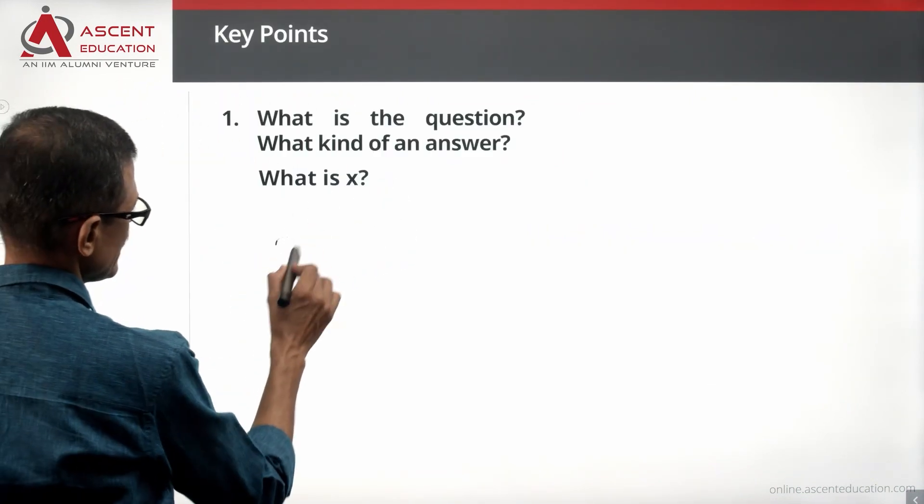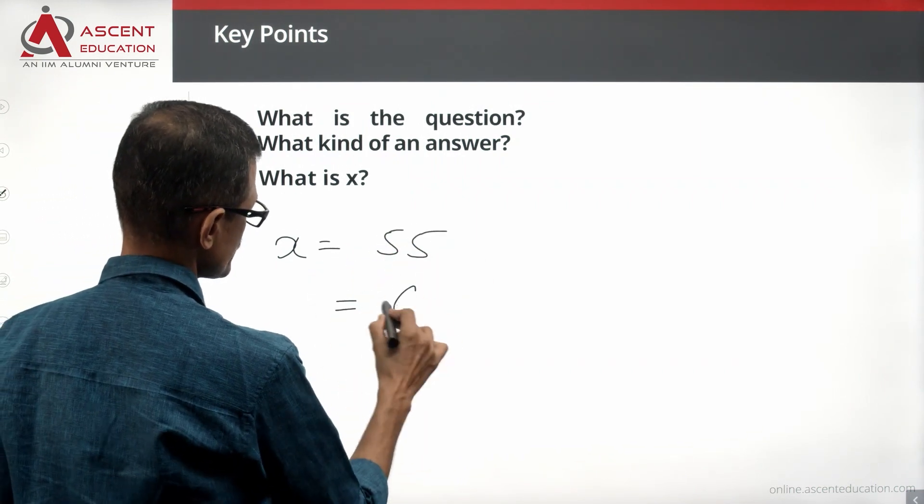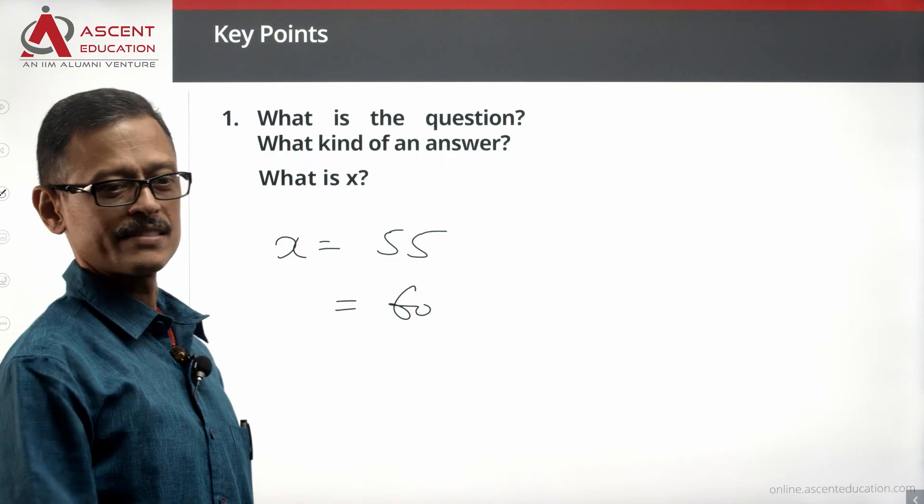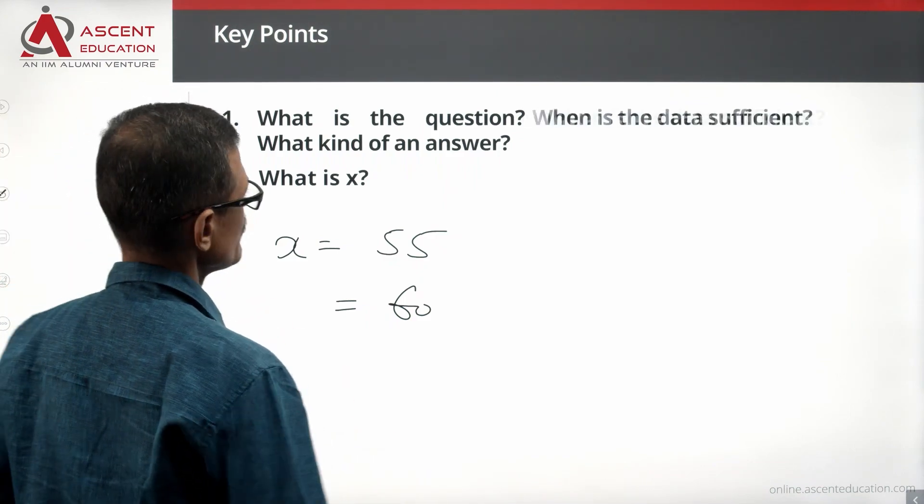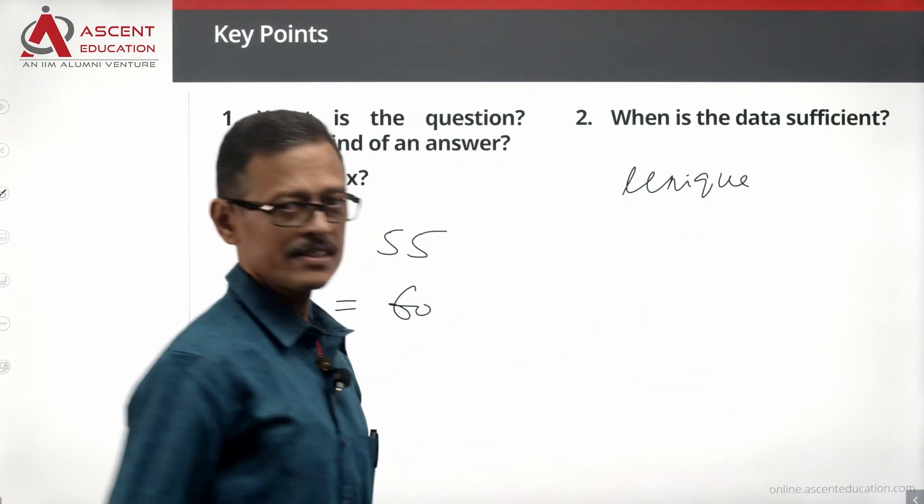What is X? X could equal 55 or 60. When is the data sufficient? When we have one single value. When you have a unique value, then the data is sufficient.